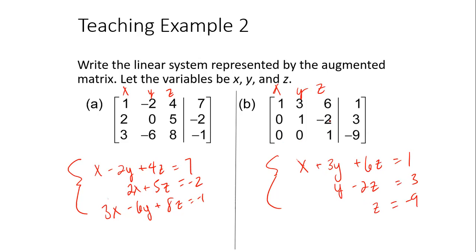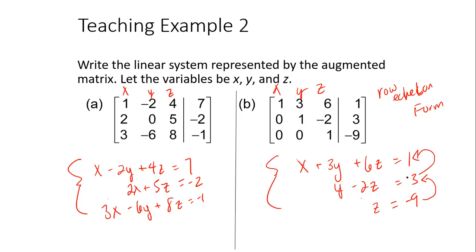For another matrix with X, Y, Z: 1X plus 3Y plus 6Z equals one; 1Y minus 2Z equals three; and Z equals negative nine. This is a special matrix called row echelon form, because it has been simplified down to three zeros and ones across the diagonal. What's beautiful about row echelon form is that Z is already isolated. You can substitute Z in to find Y, then use Z and Y to find X.